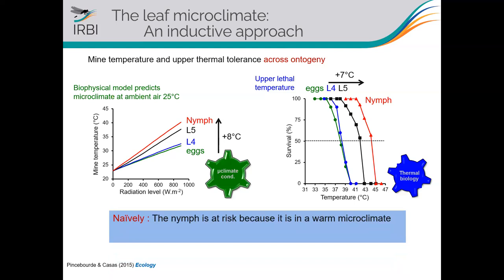Now here is a question: which stage is most at risk under warming? If you look only at the macroclimate, the pupa seems most at risk because it lives in a much warmer environment. But if you look only at thermal biology, the answer is totally opposite — pupal stages are far more heat-resistant, so early stages would be more at risk. Depending on the discipline, you can get completely opposite predictions. The message is: we need both, combined into the same framework.